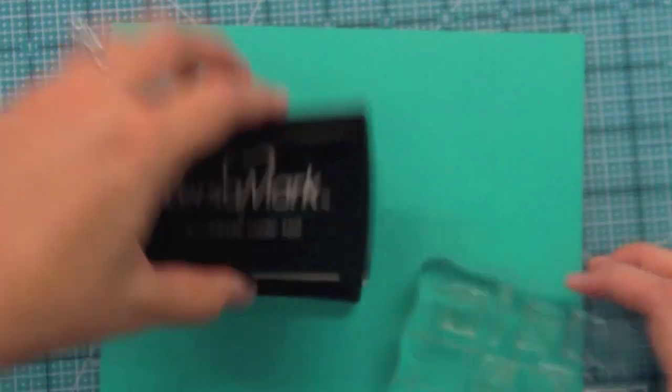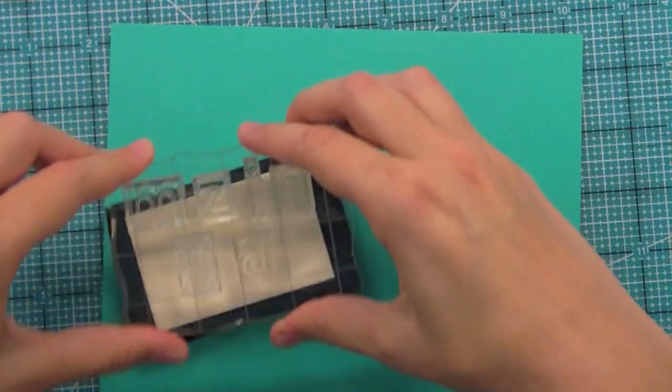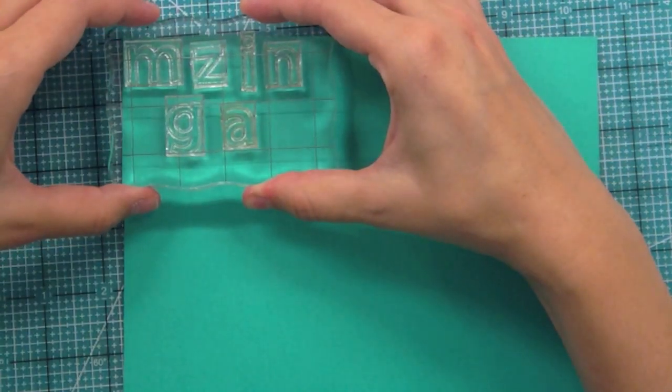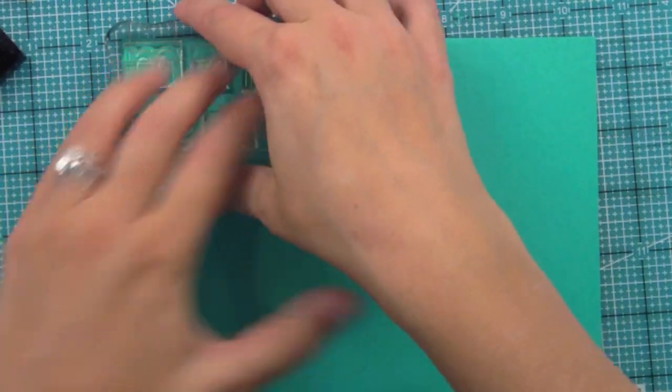Then I'm going to stamp them in Versamark, which is a really sticky ink which is perfect for heat embossing, which I'm going to do. And I haven't done for a long time because I couldn't find my heat gun. So I was really excited to do it again once I finally found it hidden in a drawer.